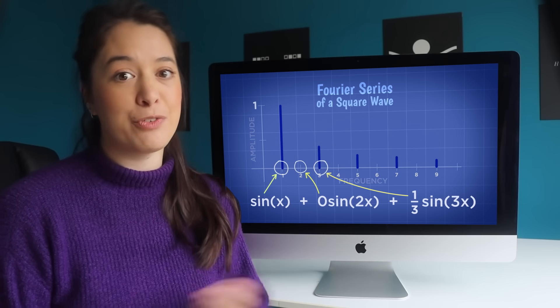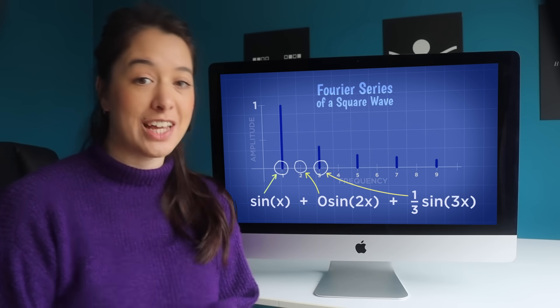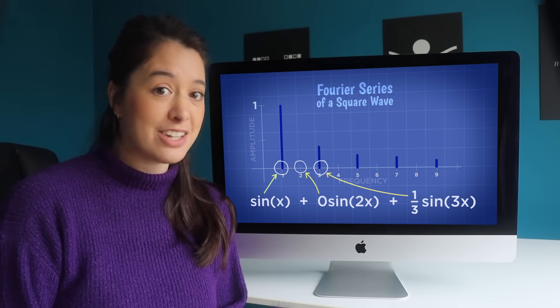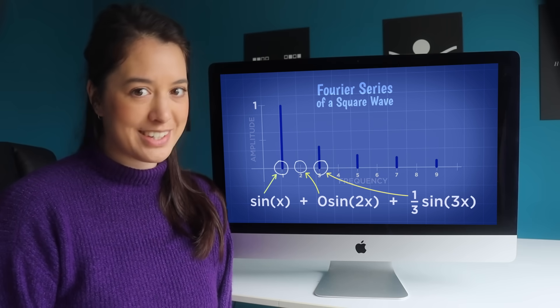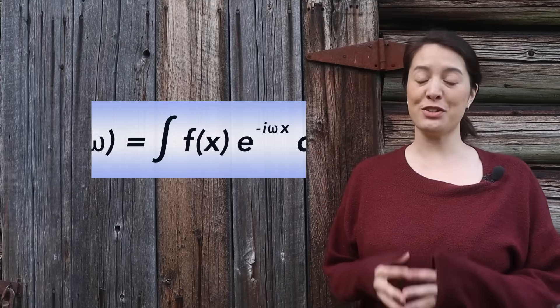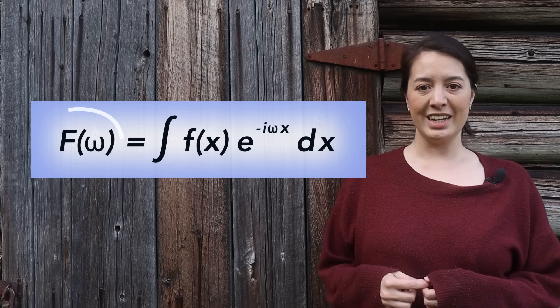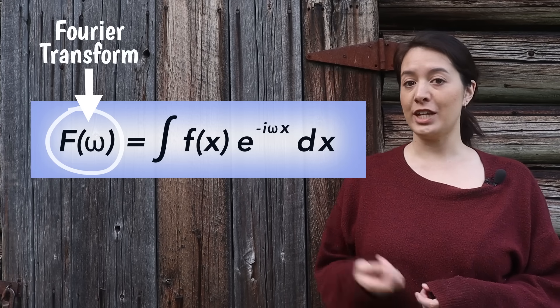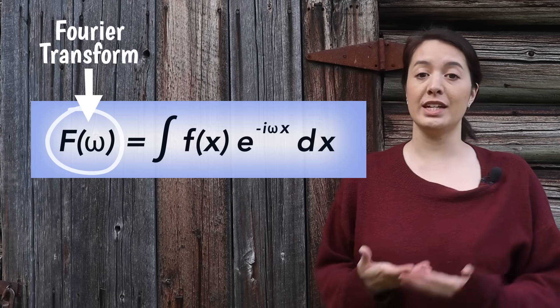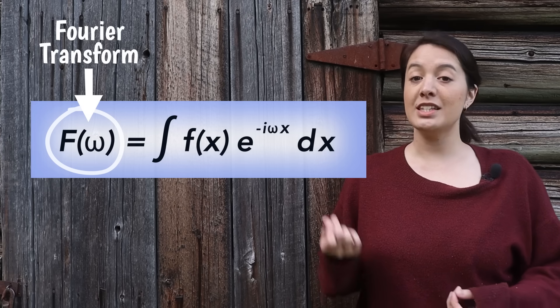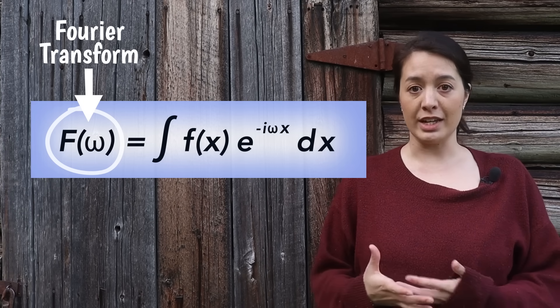To understand how the Fourier transform figures out how much of each sine or cosine is in the Fourier series, let's look at how the Fourier transform works. The mathematical equation for the Fourier transform is surprisingly simple given its power. Here f(ω) is the Fourier transform from which we get the Fourier series. Notice how it's the subject of the equation, the thing we're trying to find.